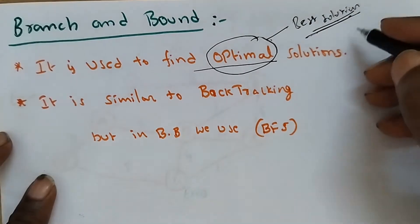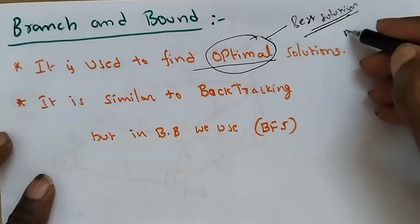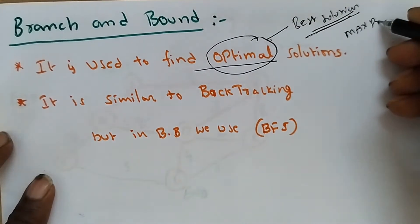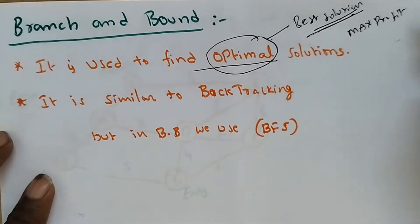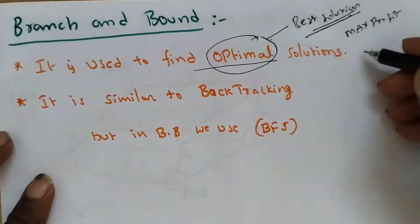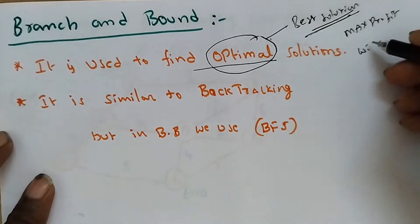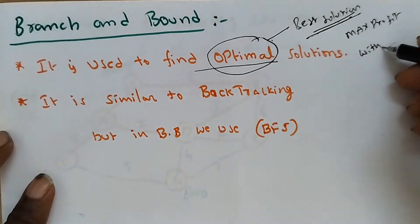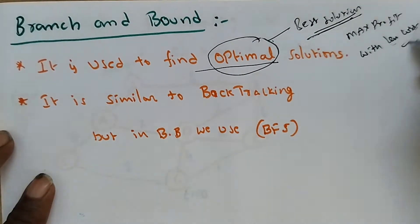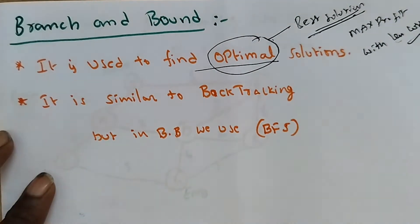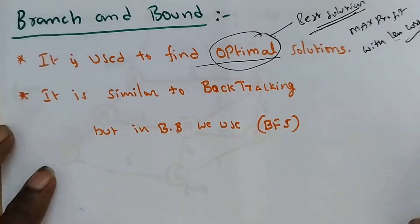For example, if your aim is maximum, you get the maximum profit with less cost — this is the best solution.